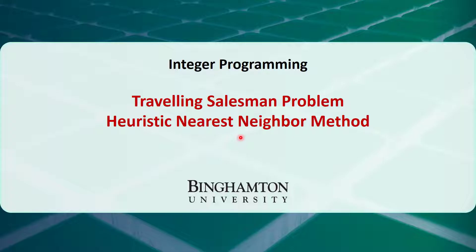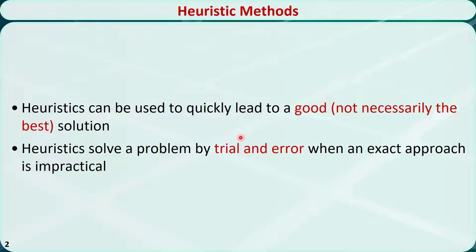The traveling salesman problem is an NP-hard optimization problem. When the number of nodes is large, it is very difficult to find the exact optimal solution or solutions. To deal with this situation, we can use heuristics to quickly find a good or satisfactory solution.